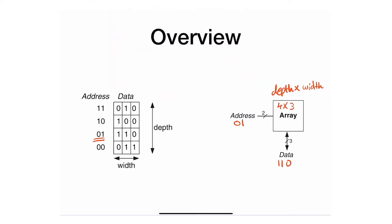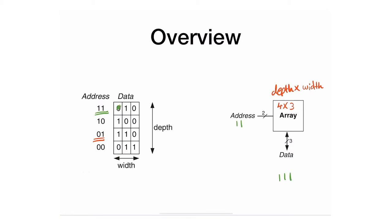Similarly, maybe you want to write into a specific memory location. Let's assume I want to write into location 11, and the data I want to write is 111. For a write, you specify the data first and then give it the address. Effectively, what you're doing is overriding that particular location with 111 — that's how you wrote into that particular row or word.